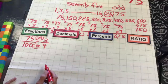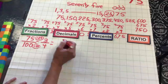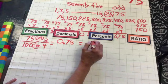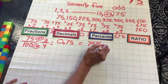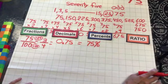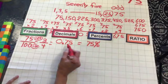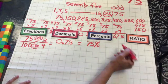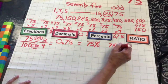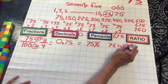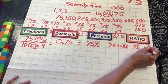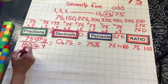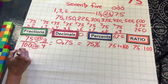So 75 hundredths in lowest terms is three-fourths. The decimal would be 0.75, and the percent would be 75%. So if you walk into Hobby Lobby and they have a sale of 75% off, you get 75 cents off every dollar — pretty good deal. The ratio would be 75 to 100, or 75 colon 100, as seen in statistics and research.